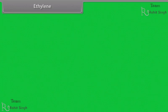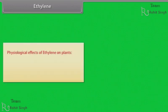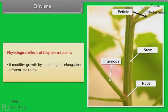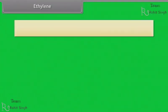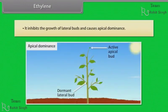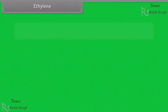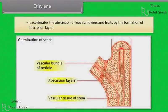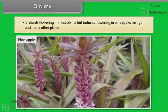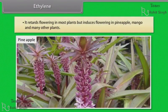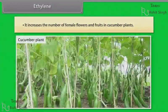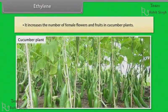Physiological effects of ethylene: it modifies growth by inhibiting the elongation of stem and roots. It inhibits the growth of lateral buds and causes apical dominance. It accelerates the abscission of leaves, flowers and fruits by formation of abscission layer. It retards flowering in most plants but induces flowering in pineapple, mango and many other plants. It increases the number of female flowers and fruits in cucumber plants.